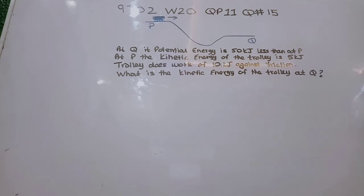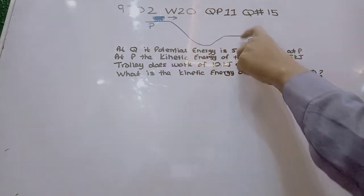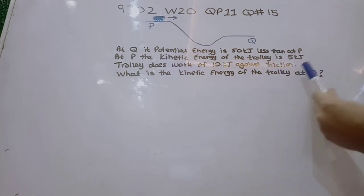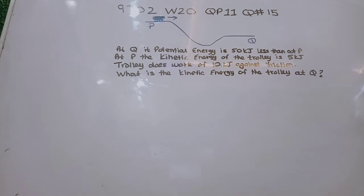The question says that we have a trolley which moved from P to Q down a slope, and at Q the potential energy is 50 kJ less than at P. At P the kinetic energy of the trolley is 5 kJ and the trolley does work of 10 kJ against friction. What is the kinetic energy of the trolley at Q?